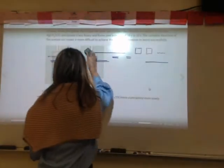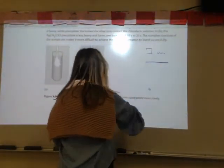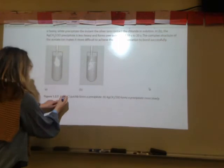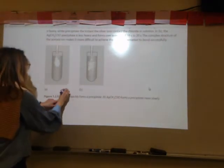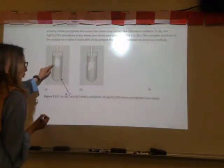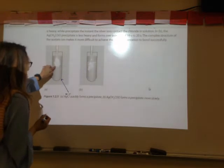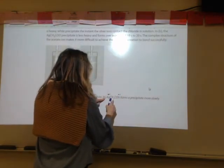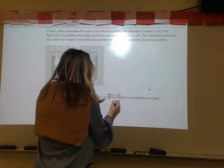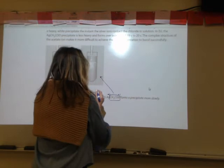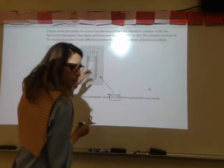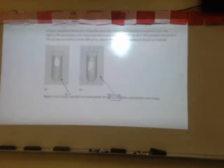Whereas a silver ion reacting with an acetate ion — which is far more complex — will form a precipitate more slowly.